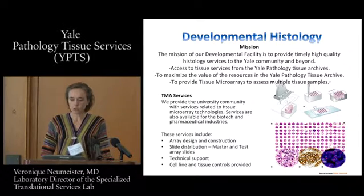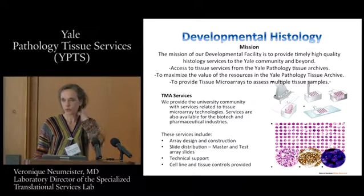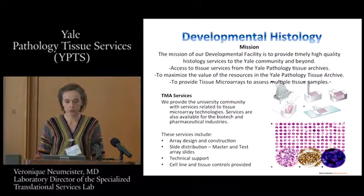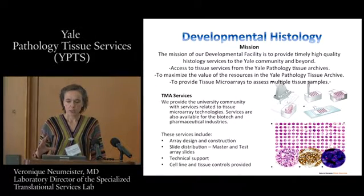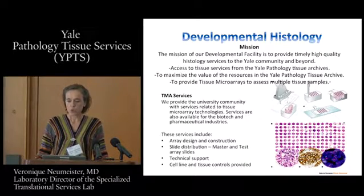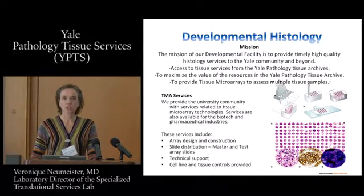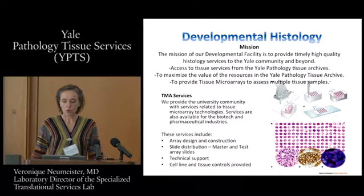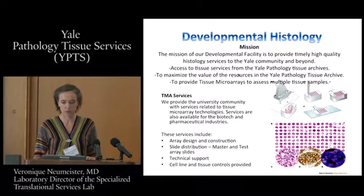Starting with developmental histology, it consists of two parts. One part works with archival tissue and the other offers more complex histology services. Developmental histology has access to the Yale Pathology Archives — we're talking about formalin-fixed paraffin-embedded tissue, because that is how it is stored. They can access all these tissue blocks for you and often work with researchers on construction of tissue microarrays, the TMAs, as you can see here.